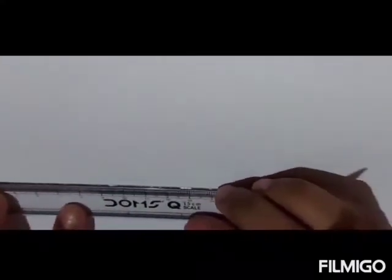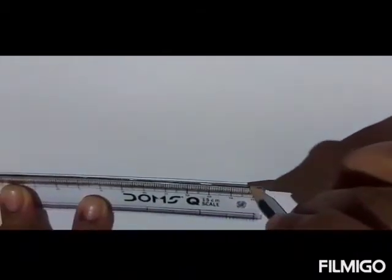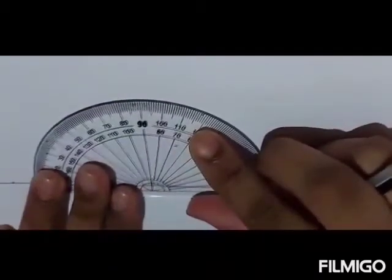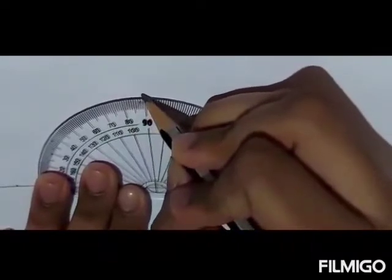Let's start with the procedure. Take a sheet of paper and draw a line segment, taking each unit as 3 centimeters. Now draw a perpendicular line which takes 90 degrees.